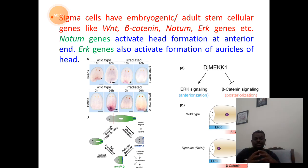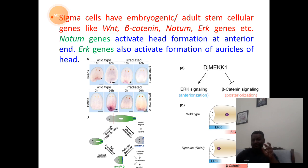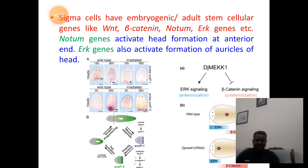Zeta neoblasts are responsible for the formation of epidermis that triggers wound healing, whereas sigma neoblasts are responsible for the formation of adult differentiated cells such as nerves, eyes, muscles, intestines, and flame cells. These sigma cells or adult stem cells have nearly 6,000 inductive genes that coordinate the process of regeneration. Few important genes are WNT genes, beta-catenin genes, notum genes, and ERG genes.